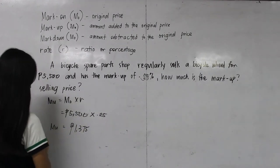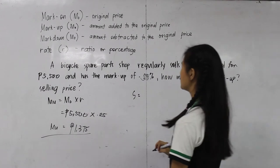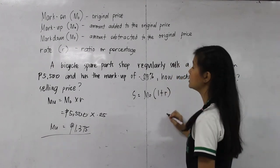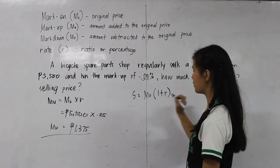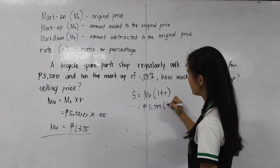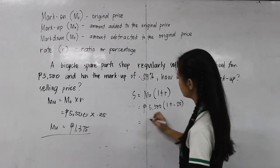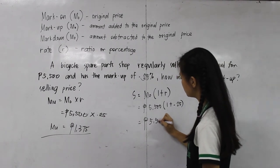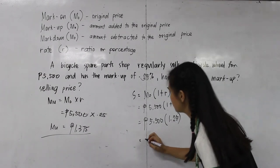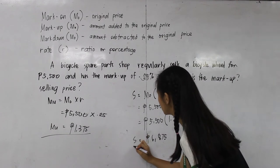Next, we're going to find the selling price. Selling price, if the rate is given, uses the formula: original price times (1 plus R). Since this is markup, it is 1 plus R. Our original price is 5,500 times (1 plus 0.25), so 5,500 times 1.25 equals 6,875. So this is our selling price.